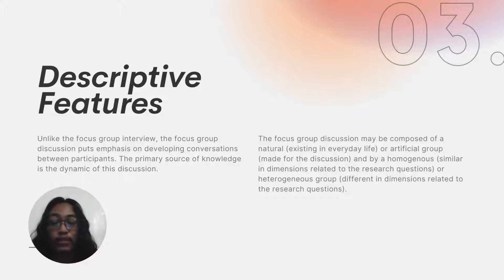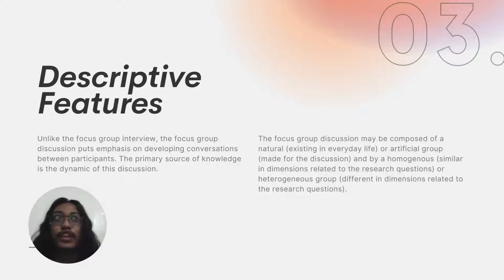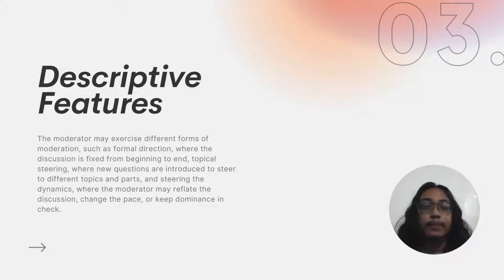Participants may also be composed of a homogeneous or heterogeneous group. A homogeneous group is similar in dimensions related to the research question — for example, having the same gender or age group. A heterogeneous group is the opposite, with different kinds of people differing in characteristics such as gender. The purpose is to compare these characteristics and their effects on the results of the focus group discussion.